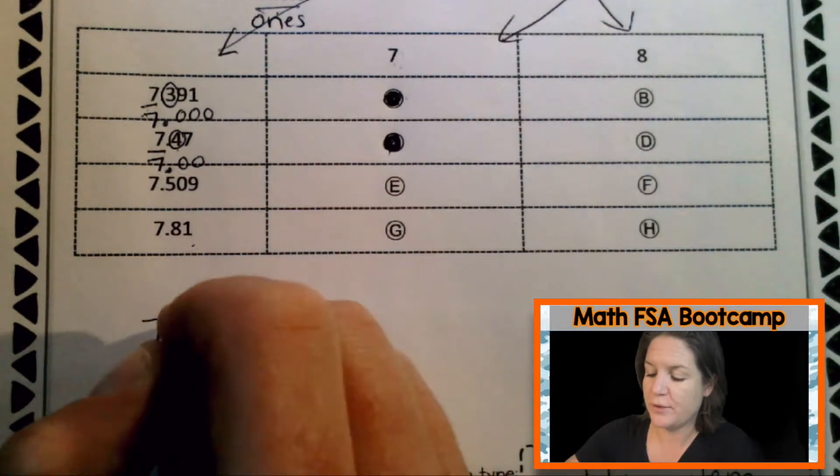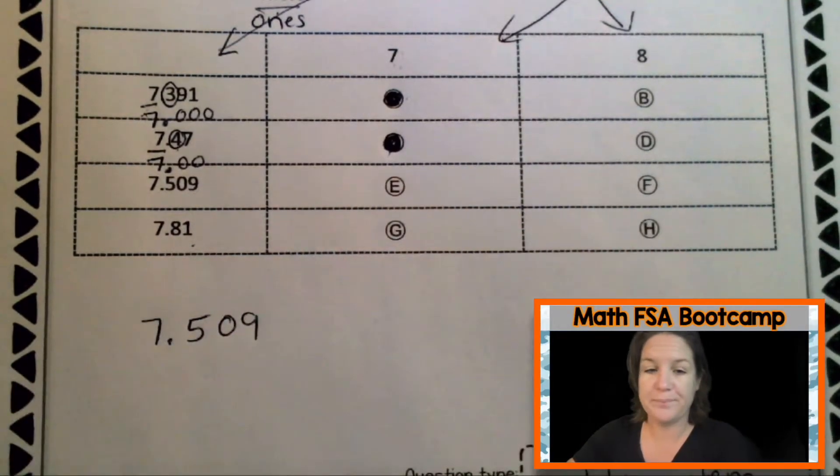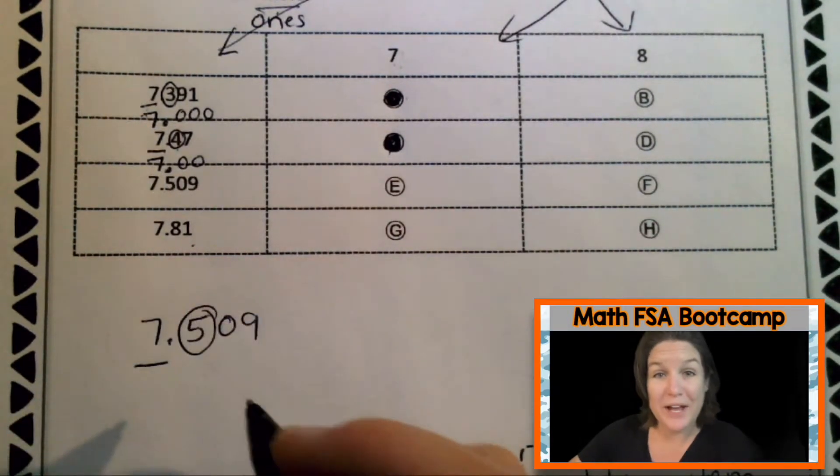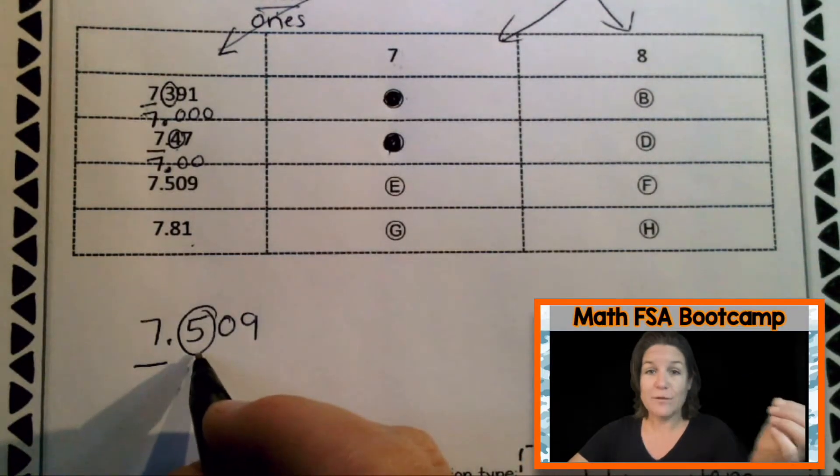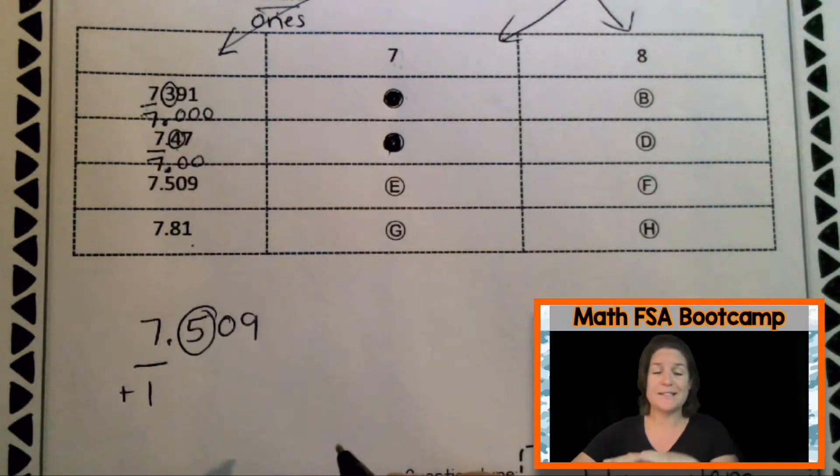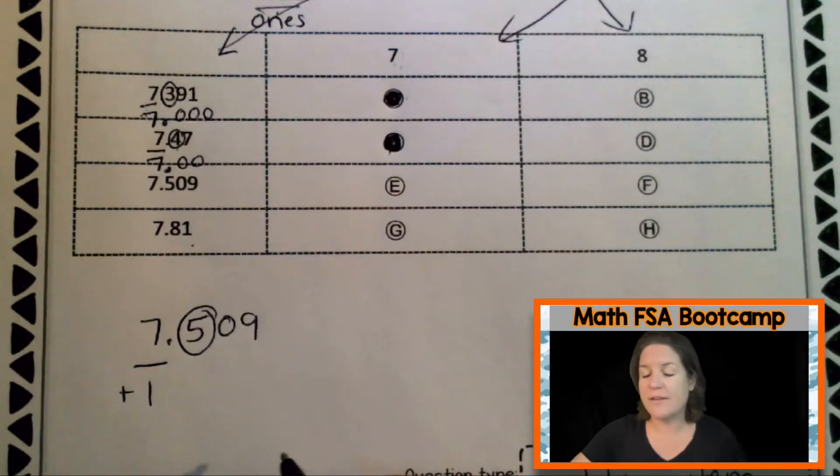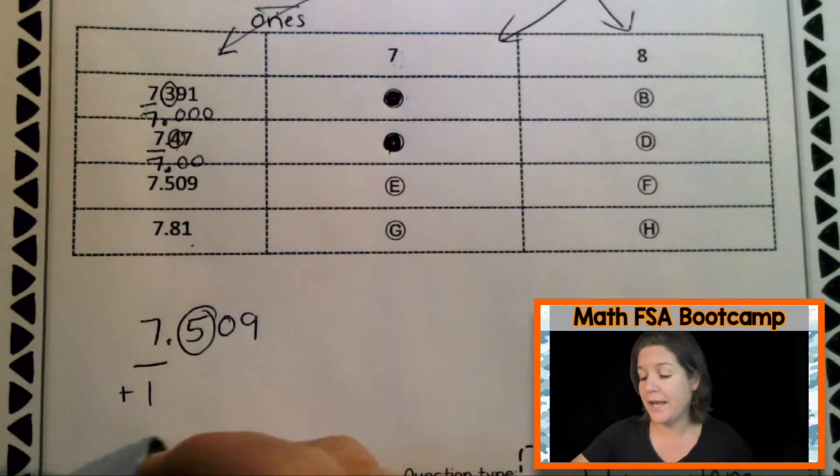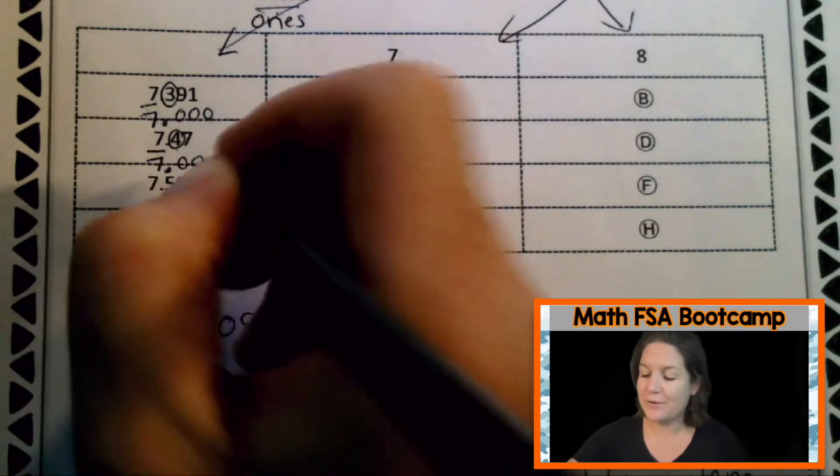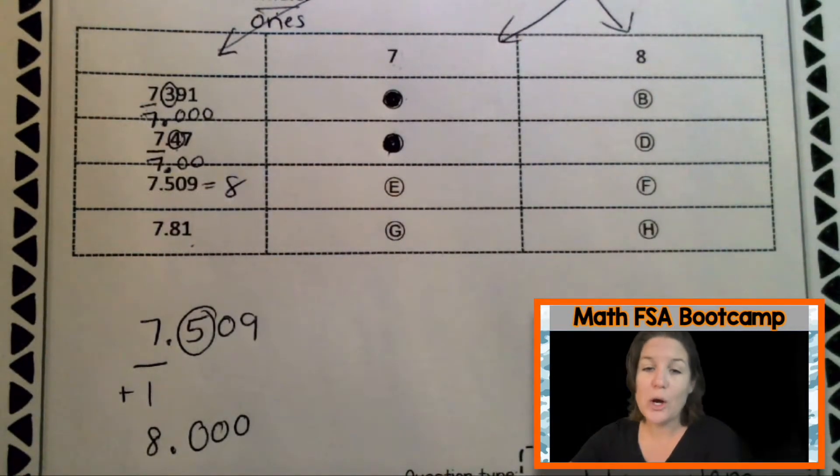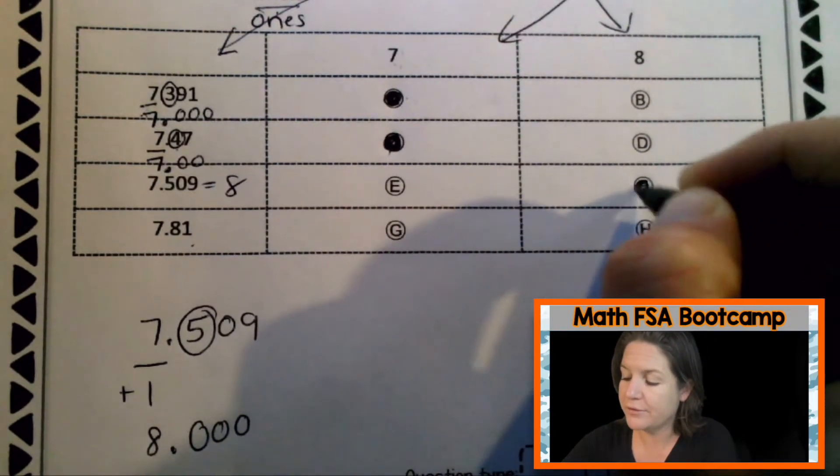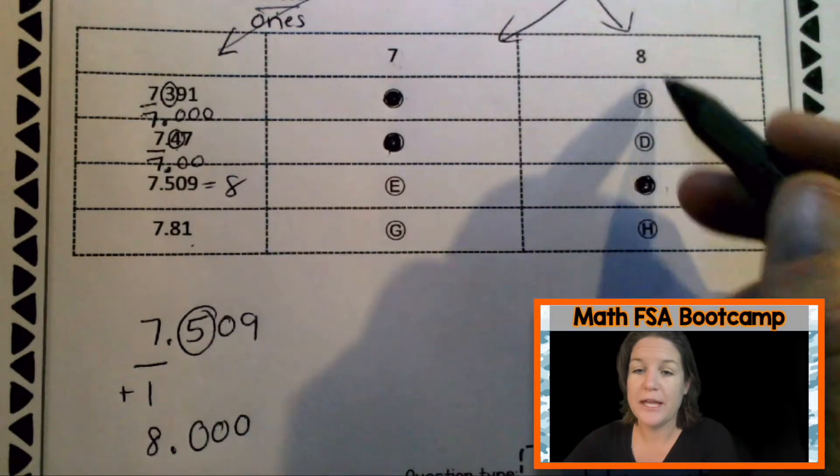Next. I'm going to bring this down here just so it doesn't get all mixed up together. When you round, find and underline the place. Spotlight to the right, decide the digits fate. This is five or more. This is five or more. So we add one to the rounding place. Let's take care of that right here. Right now. What's seven plus one? Eight. And everything after becomes zero. Check me out now. I'm the rounding hero, which would be F because it lines up with eight.